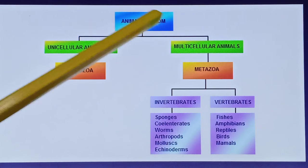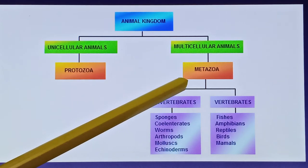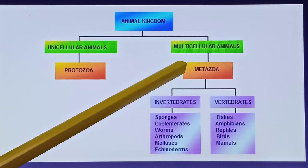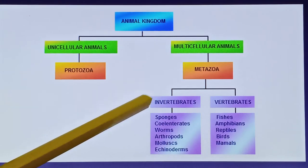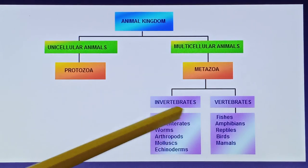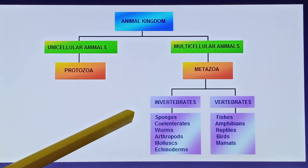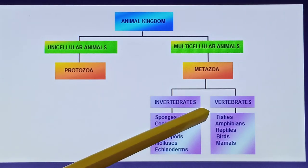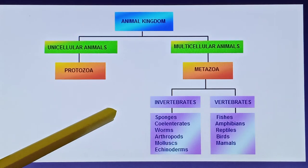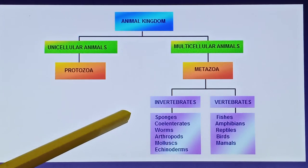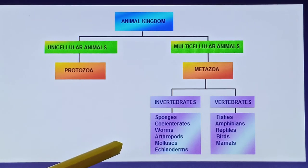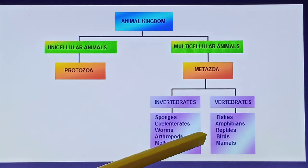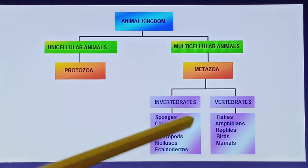Multicellular animals are called Metazoa. They are further divided into invertebrates and vertebrates. Invertebrates are without a backbone, like sponges, coelenterates, worms, arthropods, molluscs, and echinoderms — these are different phylums. Vertebrates are with a backbone and have 5 classes.